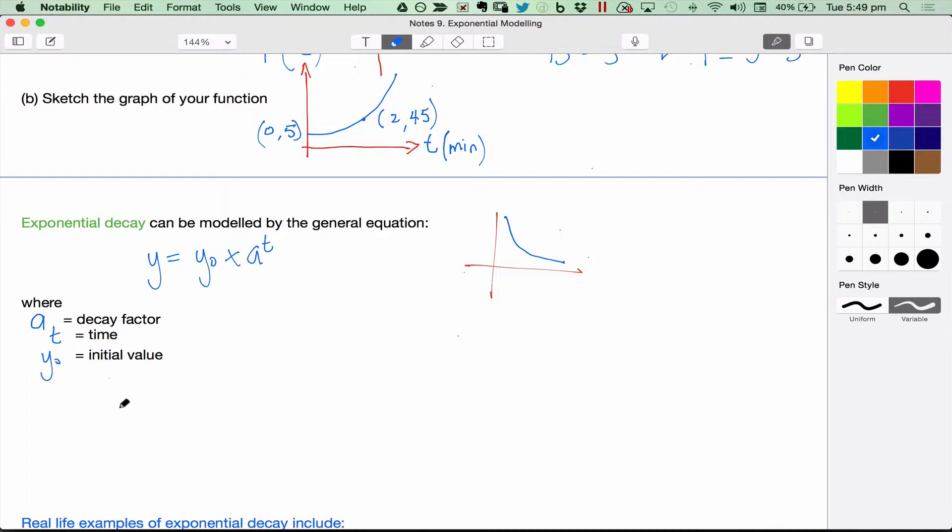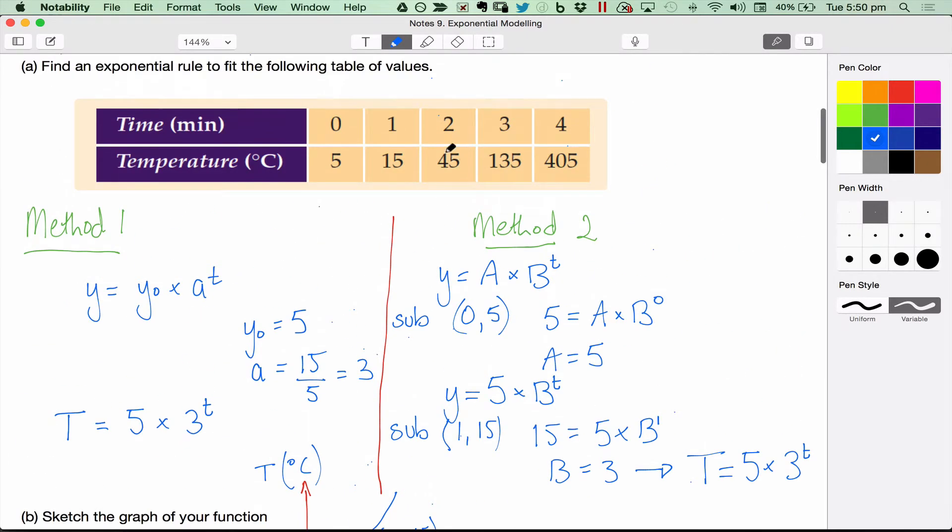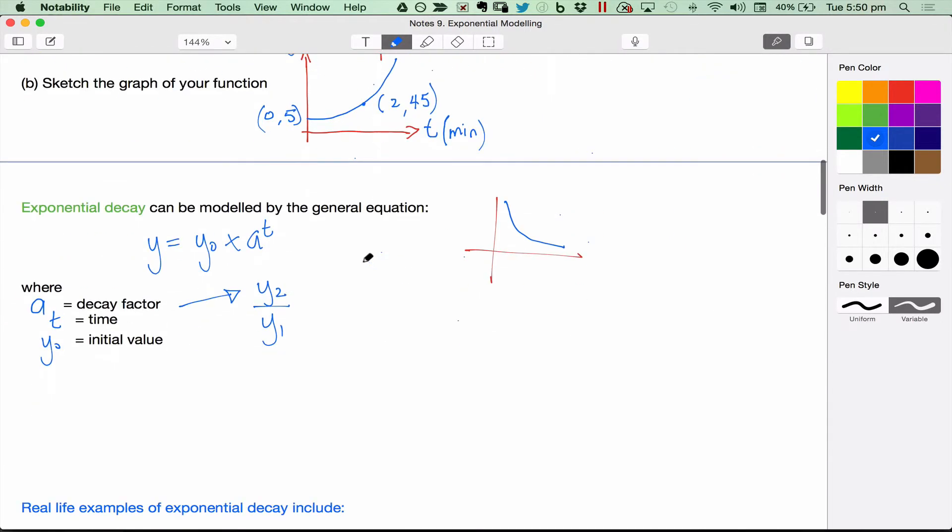When we do the decay factor this time, it's still going to be the second y value divided by the first y value. Or you can use any two values, as long as they're next to each other. You could do this one divided by this one. You should get the same division each time, the same factor. We're still going to do y2 divided by y1. But this time, because it's decaying, your decay factor will be a fraction.